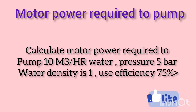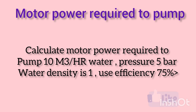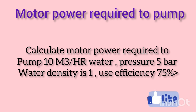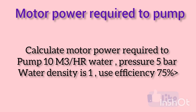Let's go through an example to illustrate how this formula works in practice. Imagine you're trying to pump water with a flow rate of 10 cubic meters per hour, at a pressure difference of 5 bars, with an efficiency of 75 percent. The specific gravity of water is 1.0.